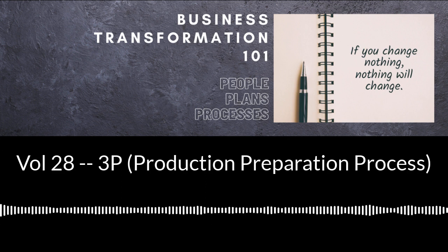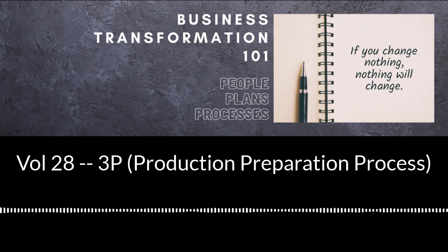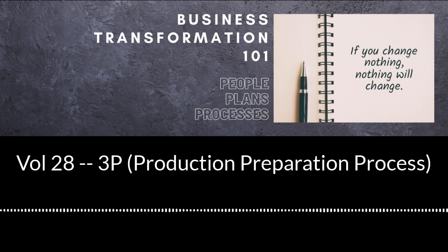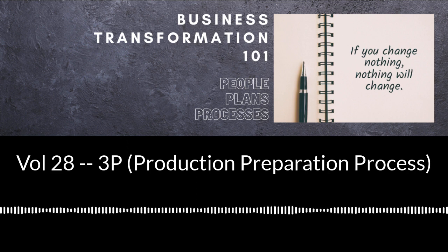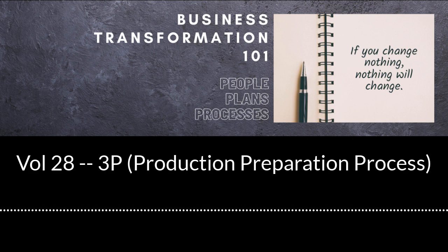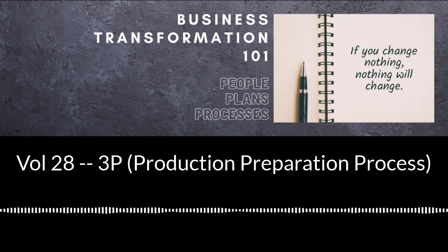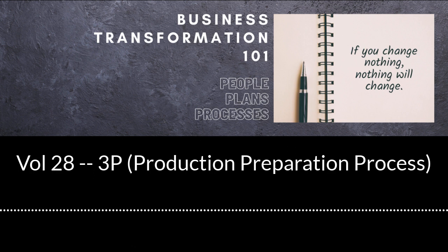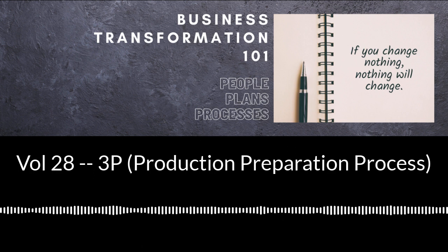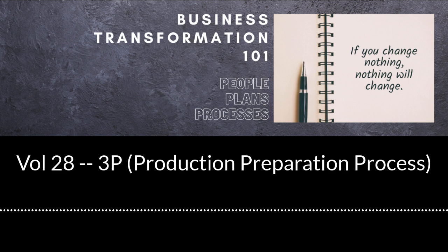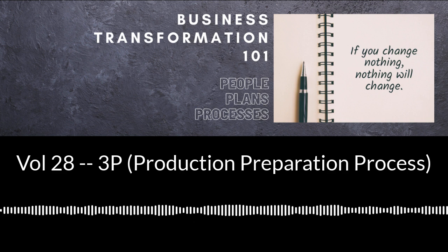3P can provide a sustainable competitive advantage through a differentiated product design coupled with a differentiated production process. While competitors can buy a product and reverse-engineer it to close a differentiation gap, it is much more difficult to reverse-engineer the process that produced the product, since it is hidden away in the company's facility and production processes.